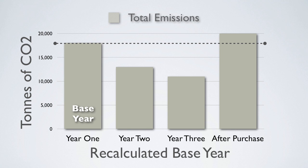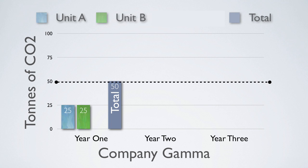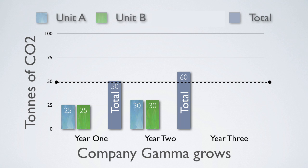Base year emissions recalculation for structural changes. This illustration shows the procedure for recalculating base year emissions for an acquisition. In this example, Company Gamma consists of two business units, A and B. In its base year — year one — each business unit emits 25 tons of CO2, for a total of 50 tons. In year two, the company experiences organic growth, leading to an increase in emissions to 30 tons per business unit, for a total of 60 tons.